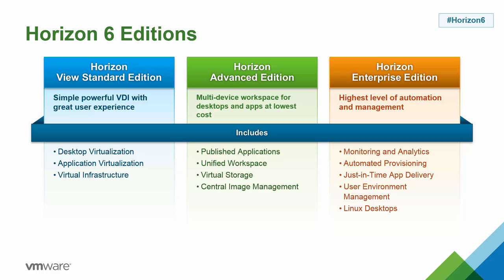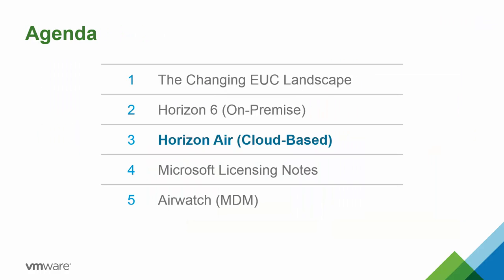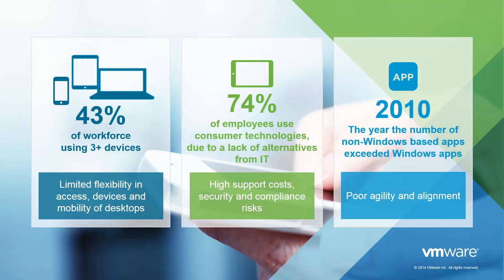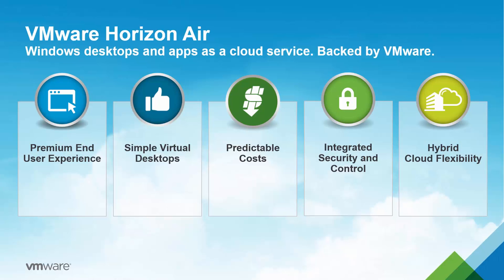That wraps up Horizon 6, our on-premise solution. Now we're moving to Horizon Air, our cloud-based desktop-as-a-service solution. Studies show that almost half of information workers use three or more devices at work to increase productivity — making device management very challenging for IT. Also, 50% of enterprise applications no longer run on Windows, with more moving to mobile and SaaS. Over 250 million end-users are accessing content-sharing applications like Dropbox, opening up significant security and efficiency challenges.